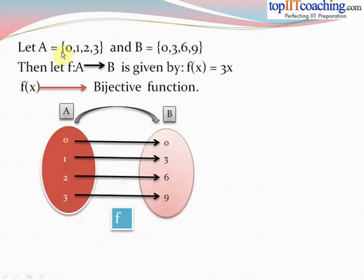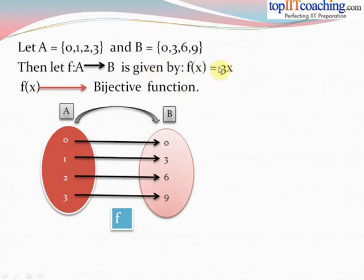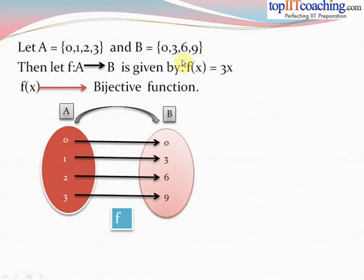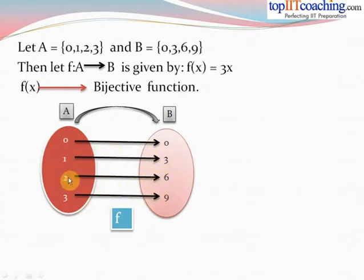Let us say that A is a set with elements {0, 1, 2, 3} and B is a set with elements {0, 3, 6, 9}. We define a function from A to B given by f(x) = 3x. Now f(x) is a bijective function, because when we put in the values 0, 1, 2, 3 we get the values 0, 3, 6, 9. It is clearly a one-one function, and it is also onto because the range equals the co-domain. Hence it becomes a bijective function.